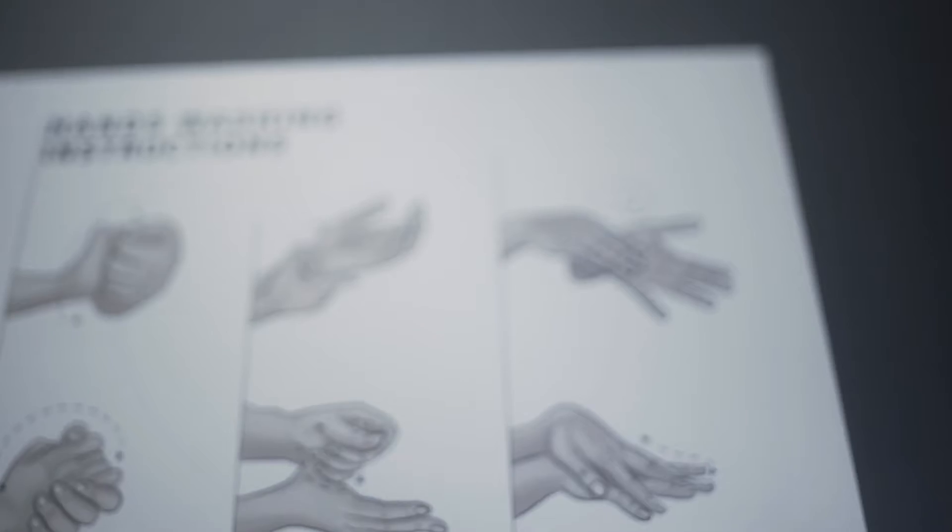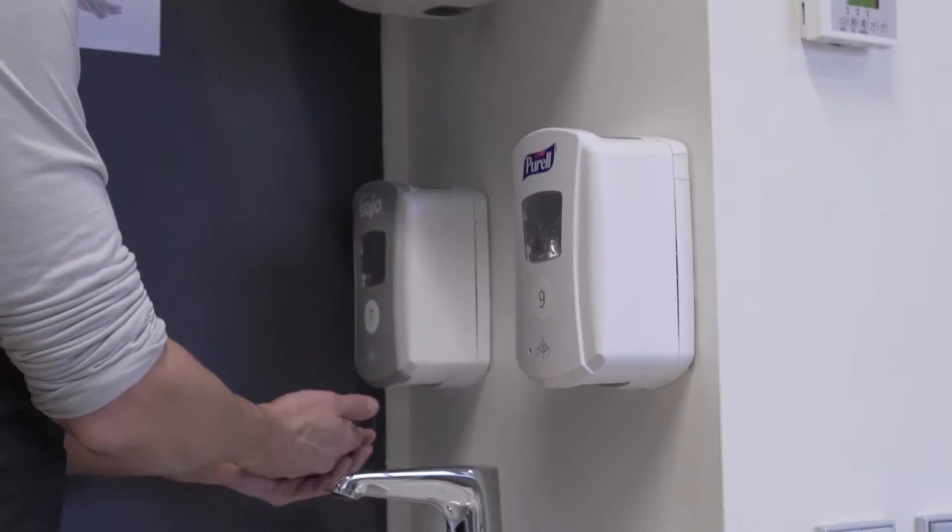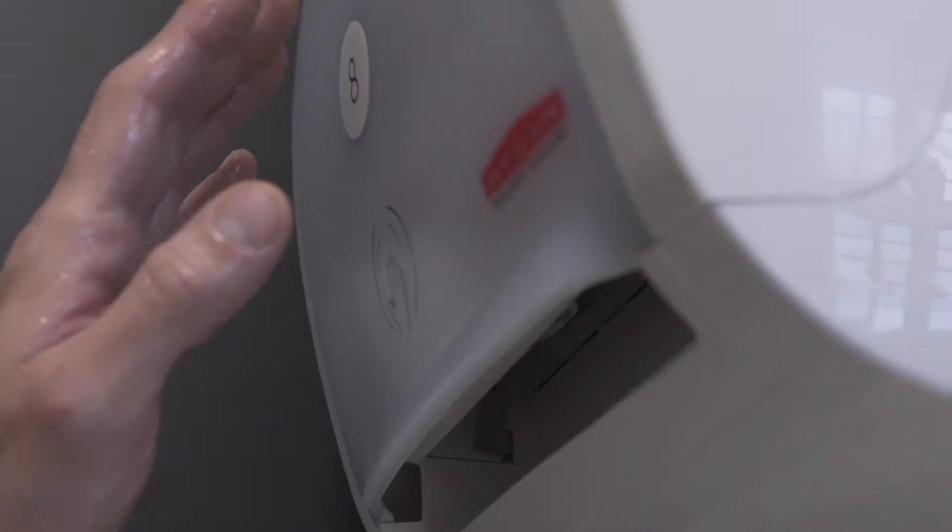Then follow the instructions on the diagram next to the wash basin by washing, drying and disinfecting your hands and lower arms thoroughly using the products provided. You can now enter the Kitchen Lab.